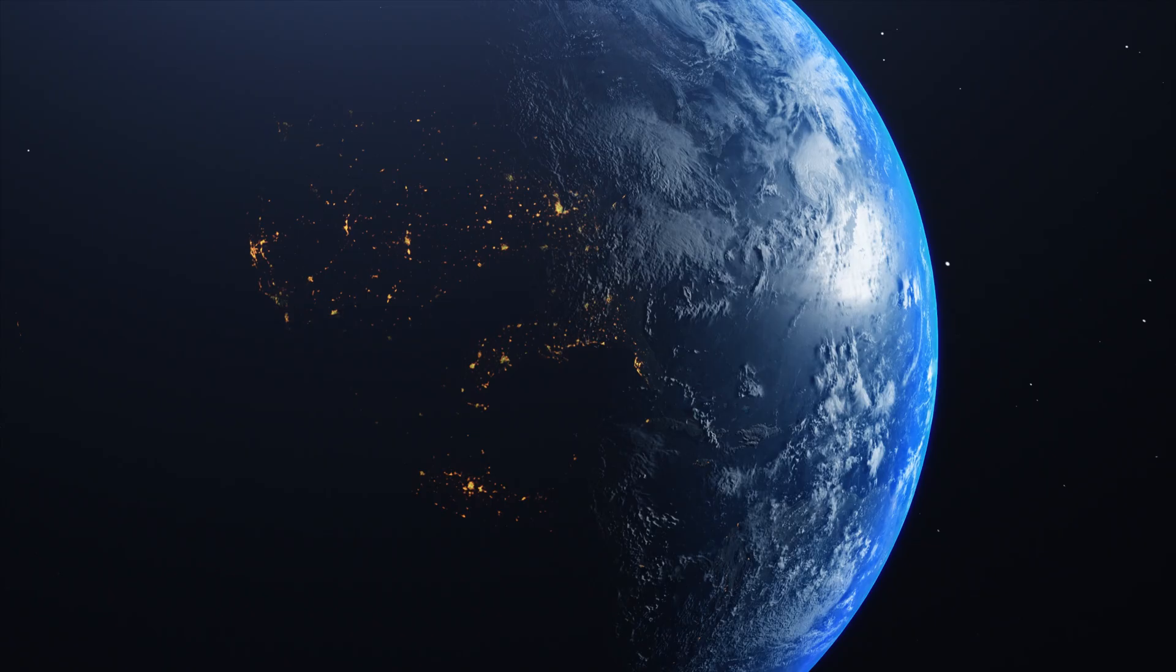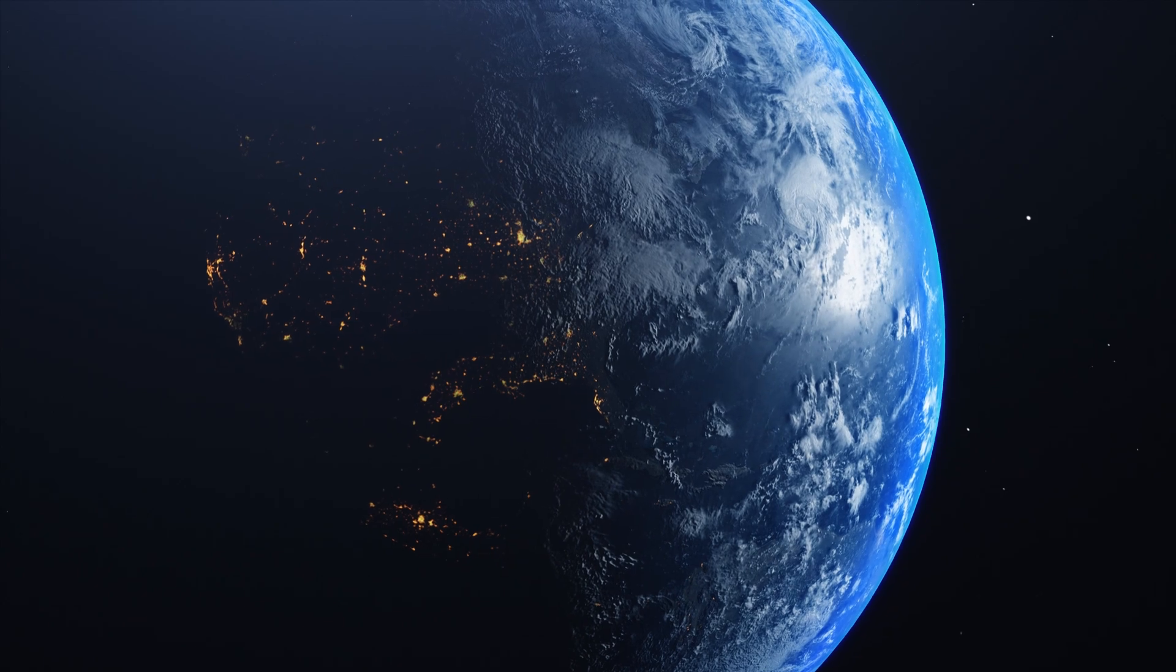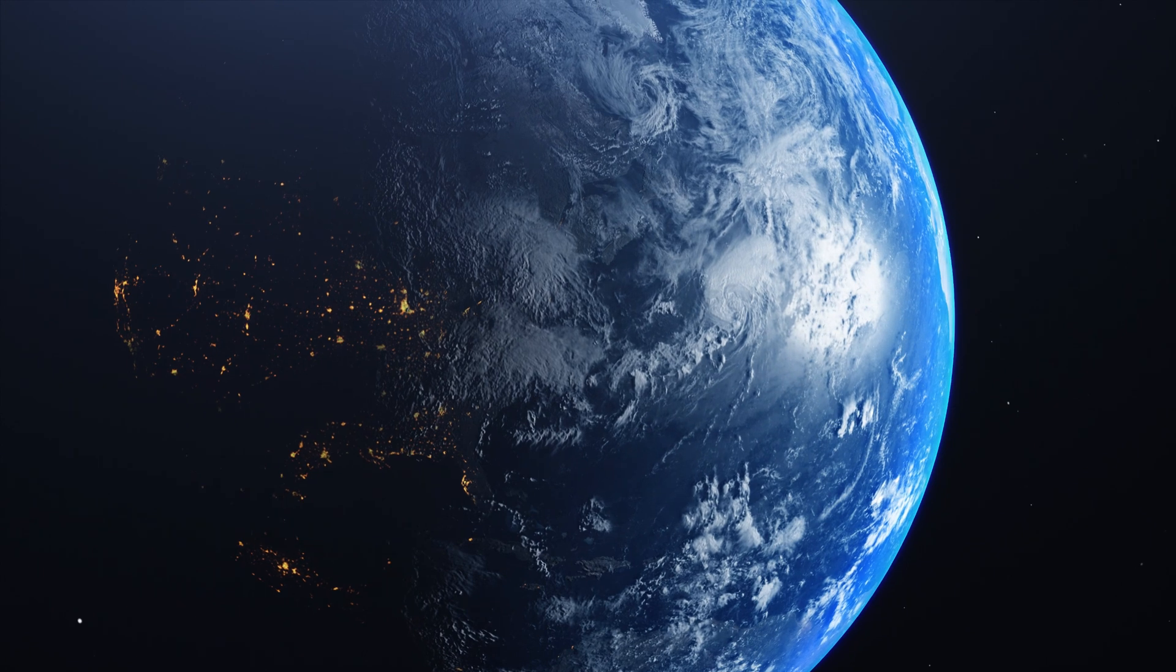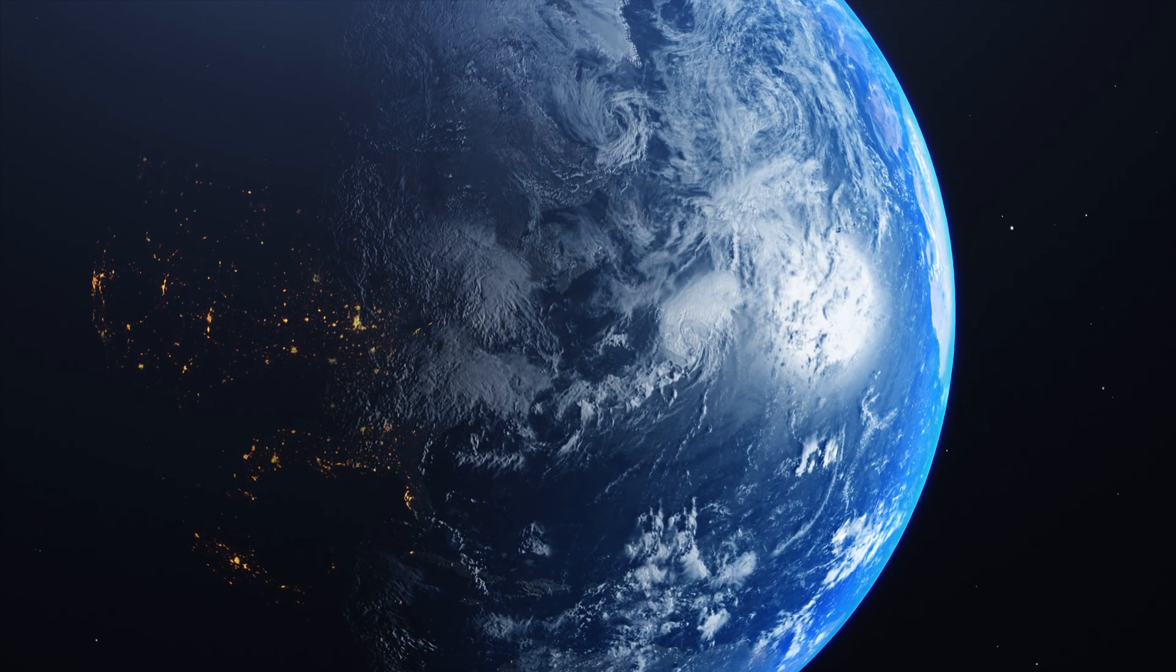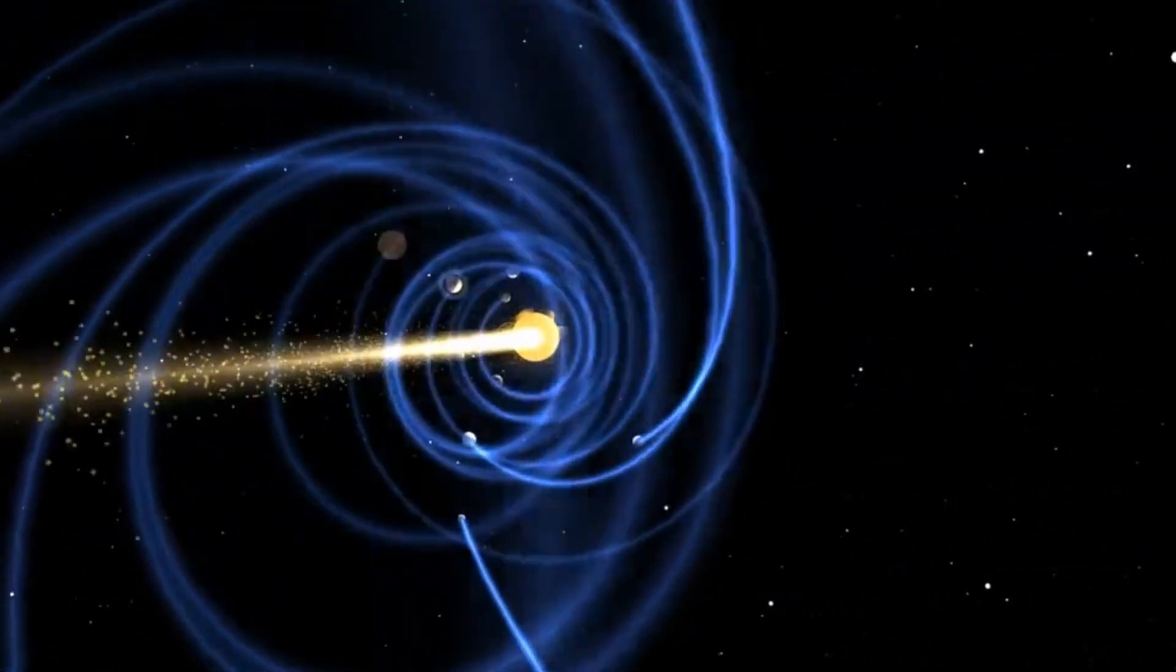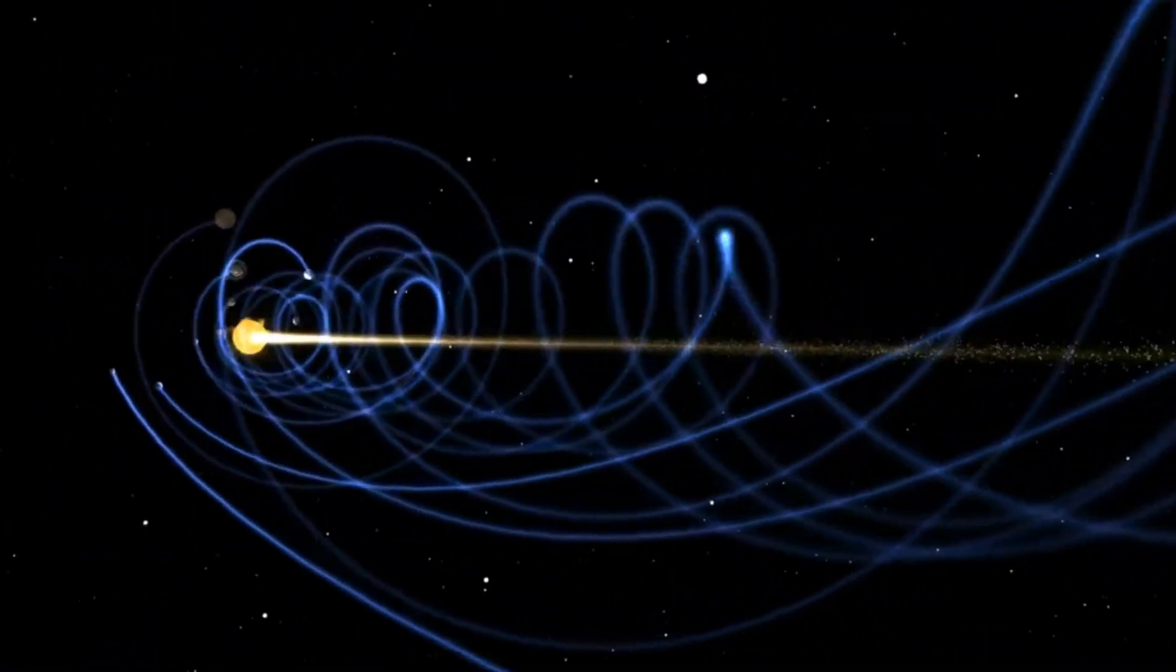Also, for half the year, Earth is moving in the same direction as the Sun through the galaxy, so their velocities add together, with the maximum speed in June. In the other half of the year, we're moving backwards relative to the Sun's motion, so in December, Earth's galactic motion is the slowest.